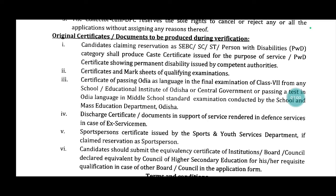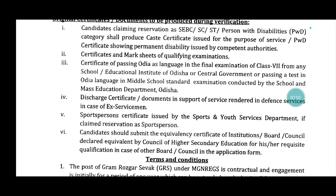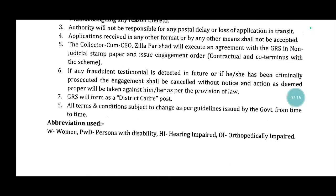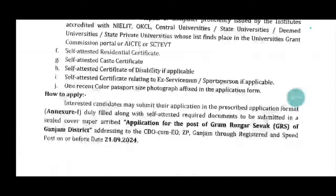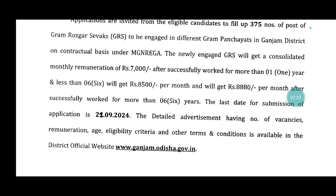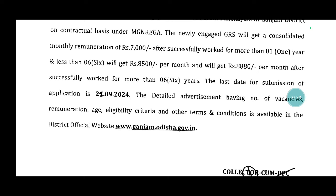Candidates claiming reservation — how much certificate? 10th, 2nd, or passing language certificate. There was a certificate for sports persons. Candidates have submitted equivalency certificate. There is much important information to share. About this salary — we will get more than one year, less than six years — we will get 8800 per month.